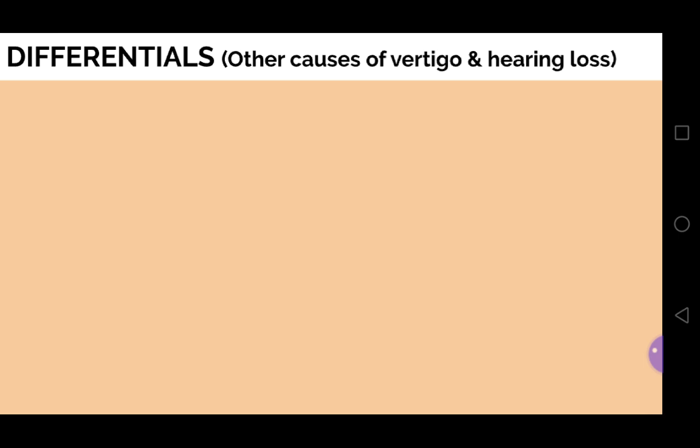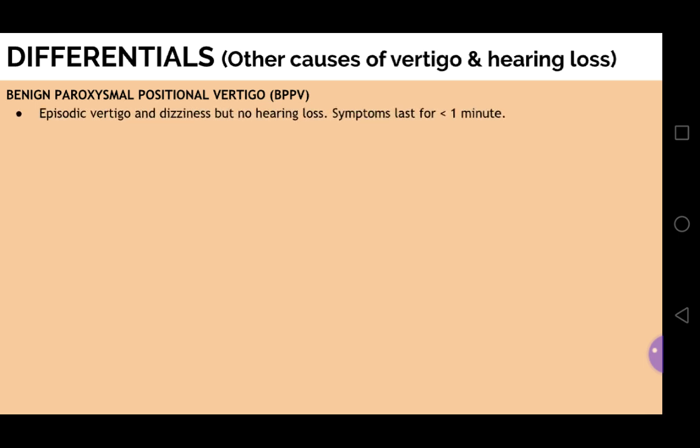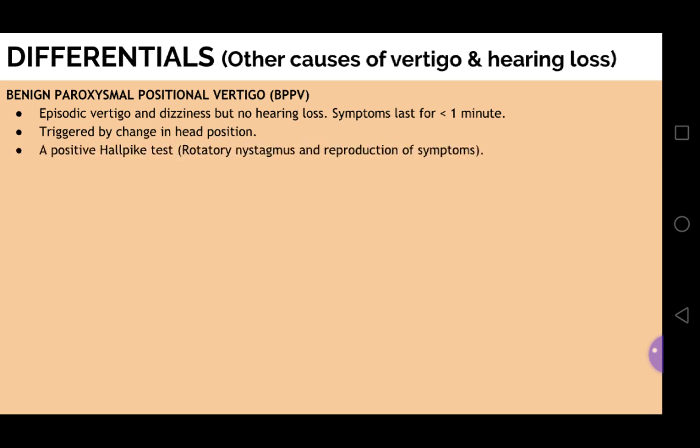There are many other causes of vertigo and hearing loss, so we have to differentiate them from these two conditions. For example, benign paroxysmal positional vertigo (BPPV): in this condition, vertigo and dizziness are episodic and symptoms last only for a few seconds — always less than one minute — and are triggered by a change in head position. A test called the Hallpike test is positive and helps to differentiate it from other conditions. Short duration and triggering by change in head position indicates BPPV.